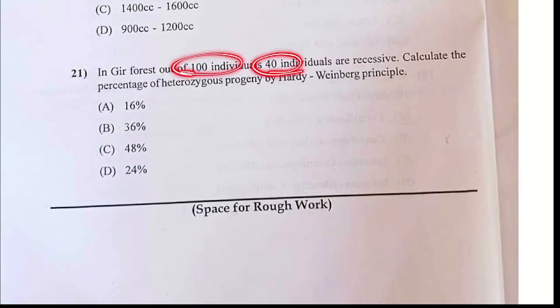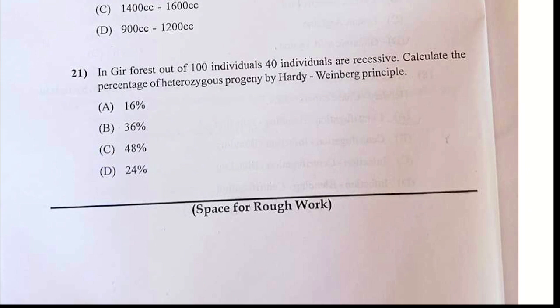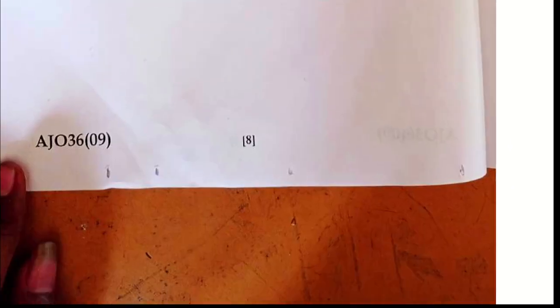In a population of 100 to 40 individuals — how much percentage using the Hardy-Weinberg principle? The answer is 48%. Your answer should be C.